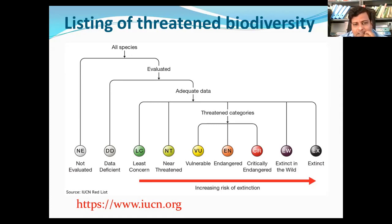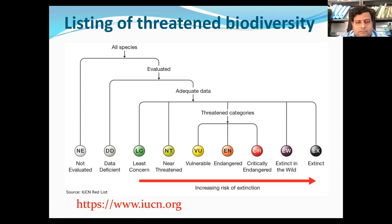Near Threatened, designated NT, is a designation applied to species that are close to becoming threatened categories such as vulnerable, endangered, or critically endangered. They are near to it, so they are called Near Threatened — they can come under a threatened category in the near future.